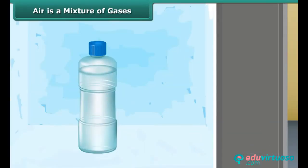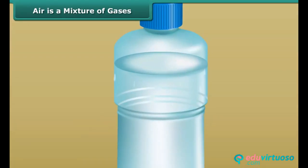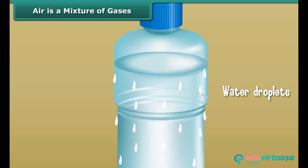When you take out a water bottle from the freezer, some water droplets appear on the outer surface of the bottle. Where do the water droplets come from? Is water leaking through the bottle? No, that's not the case. Water vapor present in the air turns back into liquid when it touches the cold outer surface of the bottle.